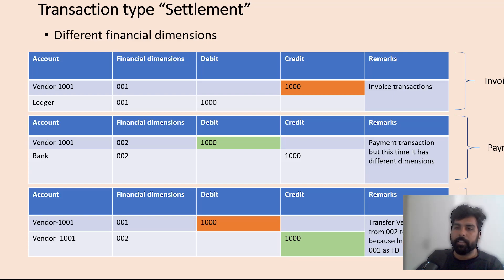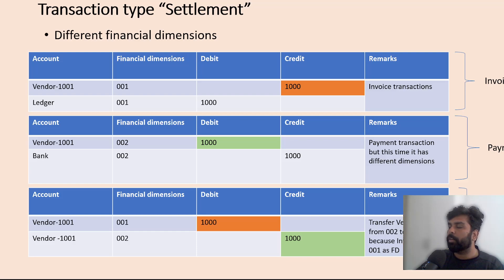There is an inconsistency in the financials. What the system will do is, on the settlement voucher, it is going to transfer that amount from dimension 002 to 001. The balance in 002 is a debit of 1000, so it is going to be credited in the settlement voucher and then debited to 001. As a result of this settlement voucher, there is a debit of 1000 in financial dimension 001, which matches the invoice transaction having the credit, and now these can be settled with each other.